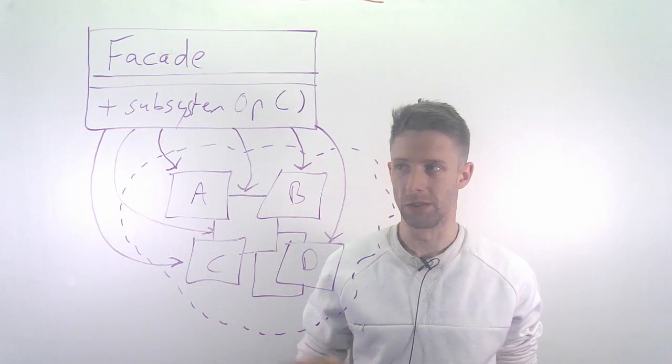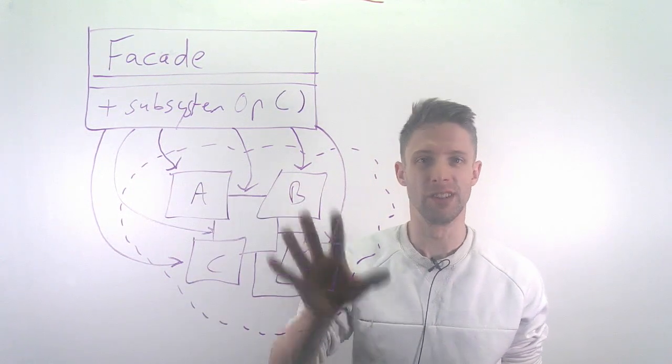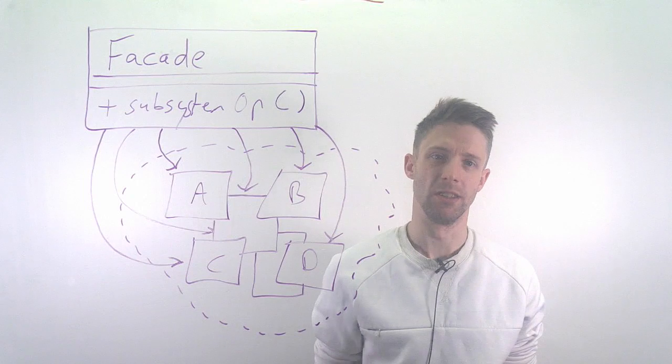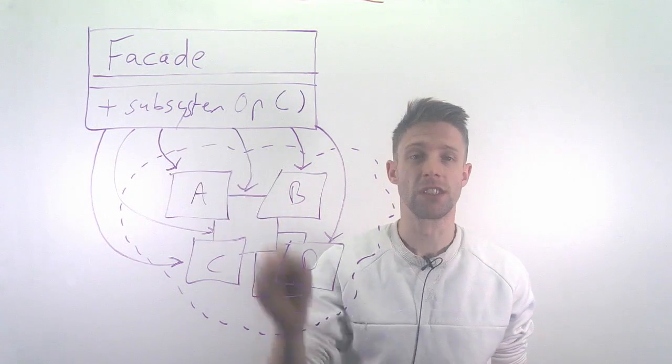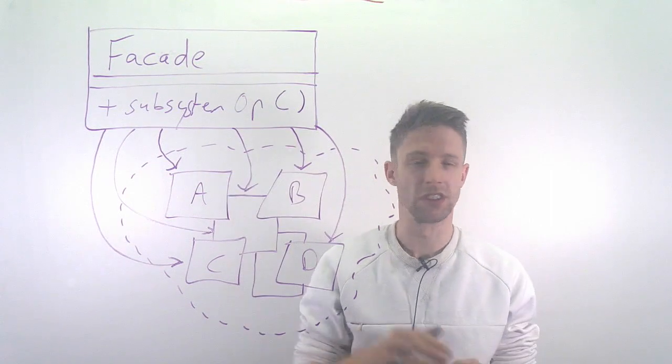Basically, you hide the complexity and the mess behind a single operation. The advantage is that it's much simpler to use—you just call this method and it does everything for you. You don't need to know all the details.